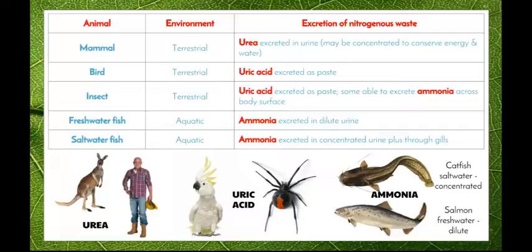Birds, which are also terrestrial organisms, excrete uric acid - it's actually excreted as a paste. That's the consistency of bird droppings, which is not a solid and not a liquid. It does have acidic properties - if you get bird poop on your car you want to remove it quickly so it doesn't eat away at the paint. Insects, which are also terrestrial organisms, also excrete uric acid as a paste. Some insects are also able to excrete ammonia across their body surface, depending on their size.